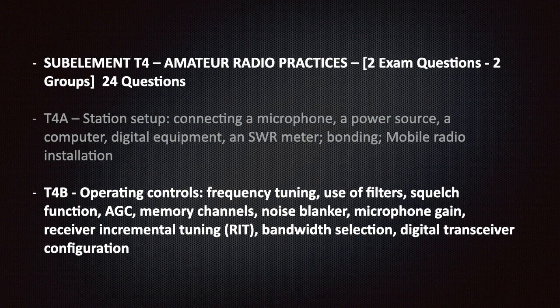The T4 section covers amateur radio practices. On your exam they will select two questions at random from this sub-element. There are two groups totaling 24 questions. In this video we will talk about T4B, which covers operating controls: frequency tuning, use of filters, squelch function, AGC or automatic gain control, memory channels, noise blanker, microphone gain, receiver incremental tuning or RIT, bandwidth selection, and digital transceiver configuration.